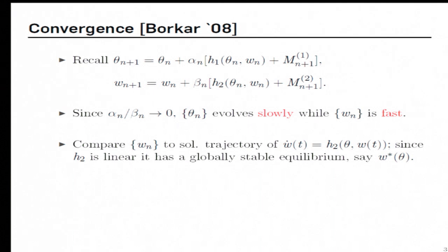Okay, so the idea given over here is to compare this trajectory with the suitable solution trajectory of this ODE. So the h2 over here is precisely this function. The theta over here is kept as a constant. The reason being that relative to w_N, theta_N more or less behaves like a constant. So because h2 is a linear function, this ODE has a unique globally stable equilibrium. Let us refer to this as w star of theta. Observe that this solution is parametrized by theta. So as theta changes, this solution changes.